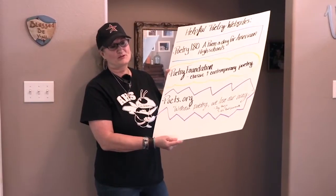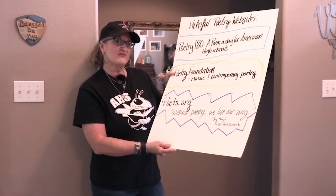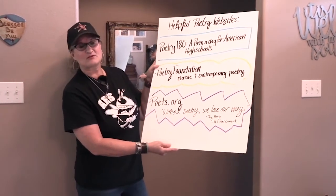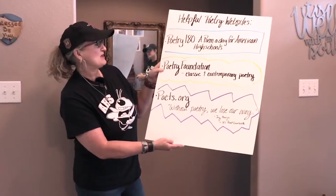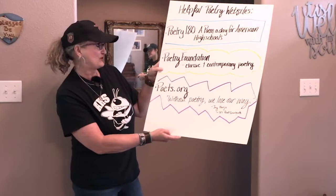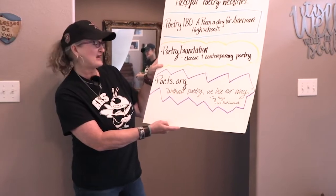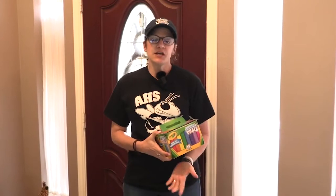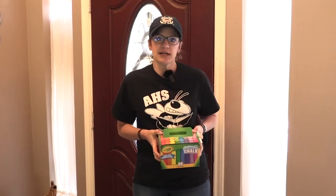We use an example from Samuel Taylor Coleridge's 'The Rime of the Ancient Mariner': 'The fair breeze blew, the white foam flew, the furrow followed free, we were the first that ever burst into that silent sea.' Alliteration helps create a whimsical feeling in your writing. Mrs. Smith and I are poetry nerds. If you don't have any poetry books, here are some great sites: Poetry 180 — a poem a day for American high schools by poet Billy Collins; Poetry Foundation — classic and contemporary poetry; and poets.org, whose front page reads 'without poetry we lose our way.'